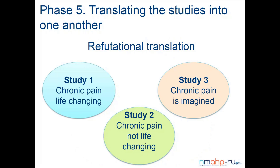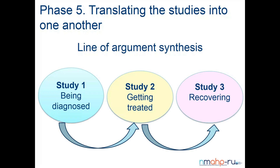Refutational translation looks for evidence that doesn't fit. For example, study one might find that chronic pain is life-changing, whereas study two might find chronic pain is not life-changing, and study three might say chronic pain is imagined. These are at odds in terms of findings, so you map that as well. Primary qualitative researchers might know this as looking for disconfirming cases — alternative explanations — when doing primary qualitative data analysis.